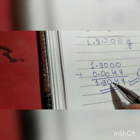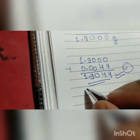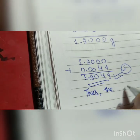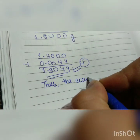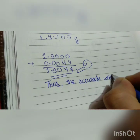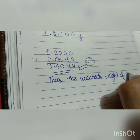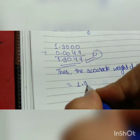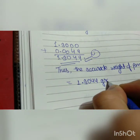Now add this: 1.9044. And this is our correct weight. You can see 1.9044. Thus the accurate weight is 1.9044 grams, equals 1.9044 grams.